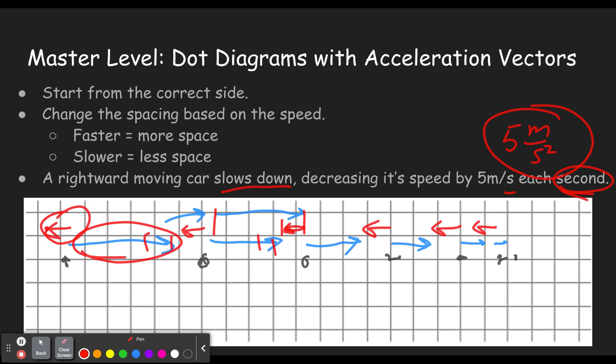On the other hand, if it was speeding up, then the acceleration would point in the same direction as the velocity. All the levels on here have the speed increasing or decreasing by a set amount each second. That means your acceleration is always going to be the same-sized arrow all the way across. The big question is which way is the acceleration arrow facing.